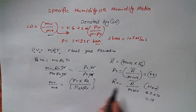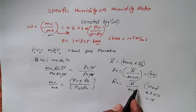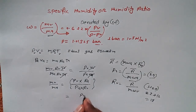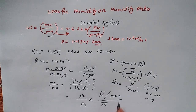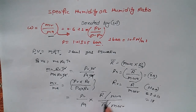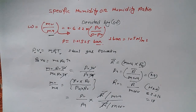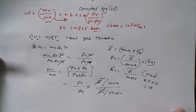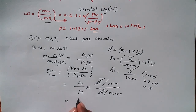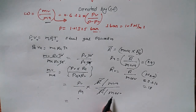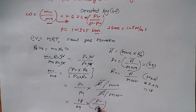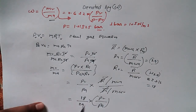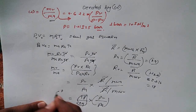Now substituting Ra and Rv into the equation, the universal gas constant R-bar cancels out since it appears in both numerator and denominator. What remains is the ratio of molecular weights: molecular weight of air (29) divided by molecular weight of vapor (18), multiplied by Pv upon Pa. Calculating this gives us 0.622, so omega equals 0.622 times Pv upon Pa.